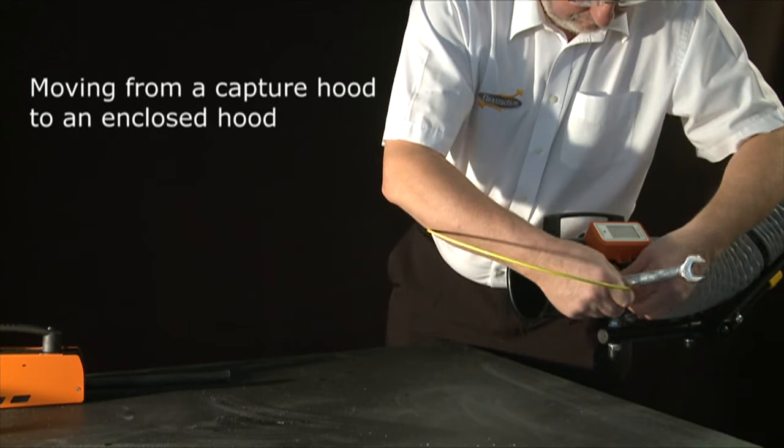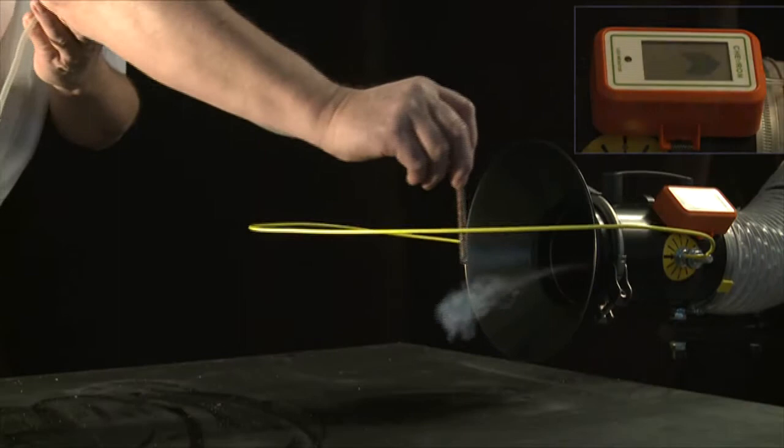For this demonstration, a yellow wire loop has been fixed to the hood to represent the shape of the capture zone for this process.